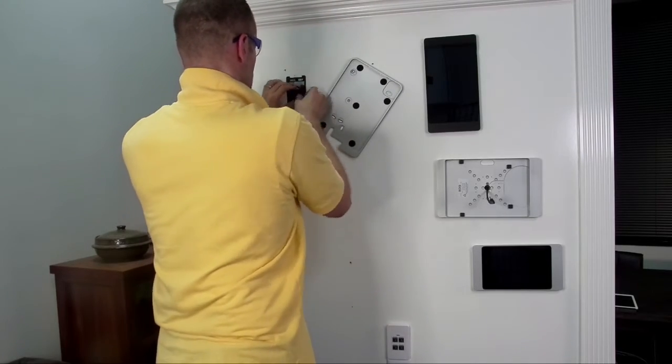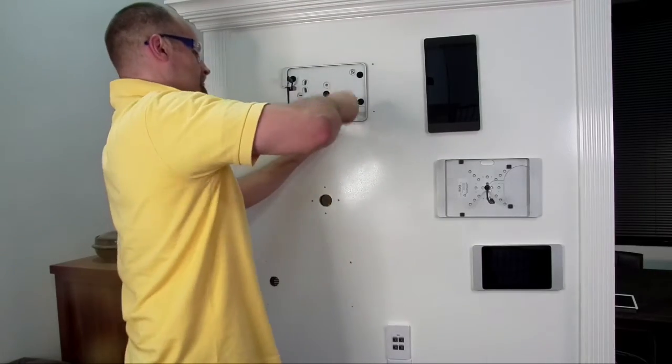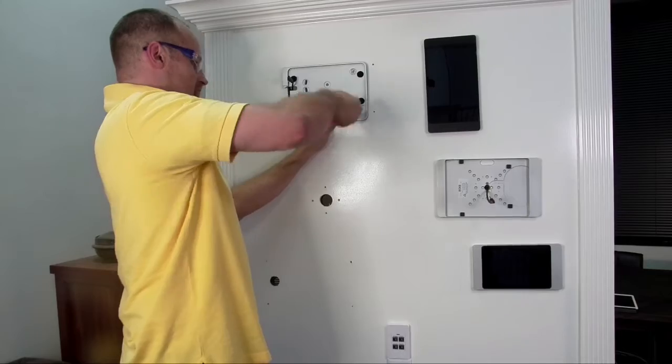So before you secure your mount, make sure to slide in the GAT USB-C PD into the in-wall mount and attach your USB-C cable. Now you can finish securing the mount to the wall.